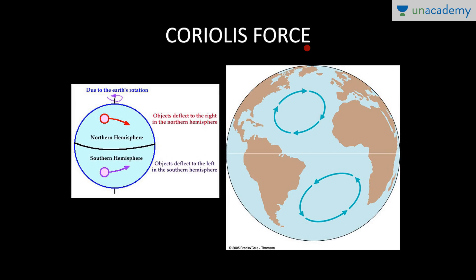The next force is Coriolis force. This is a pseudo force discovered by the scholar G.E. Coriolis, and it is due to the earth's rotation. As per this force, objects deflect to the right in the northern hemisphere and deflect to the left in the southern hemisphere. You can see that ocean currents are deflected towards their right in the northern hemisphere, and they deflect towards their left in the southern hemisphere. This is how the movement of ocean currents is influenced by Coriolis force.